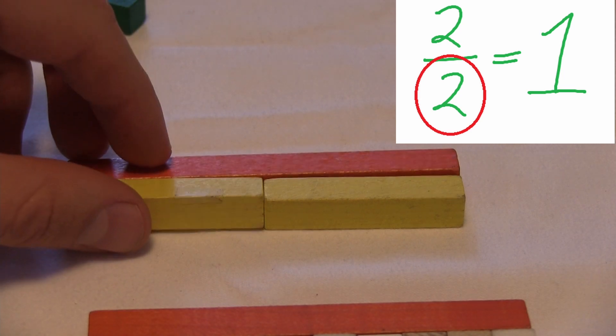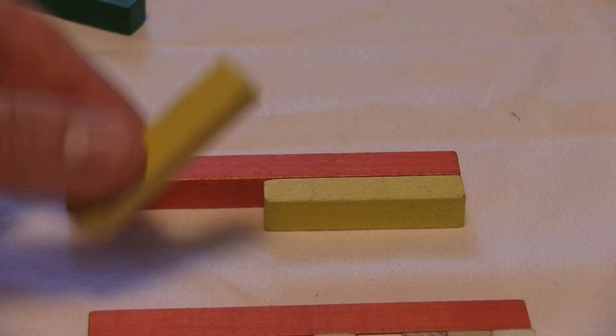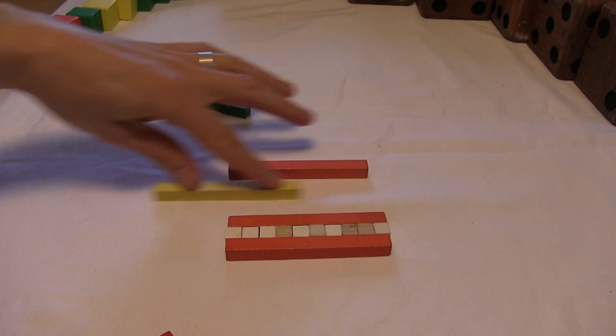So one-half, or one over two, is one of the parts when two equal a whole. Let's try it with another one.